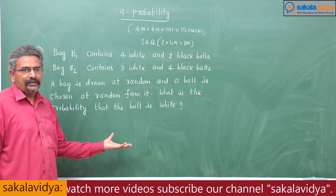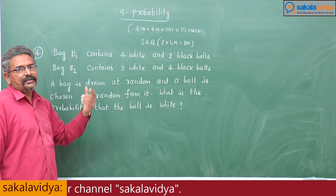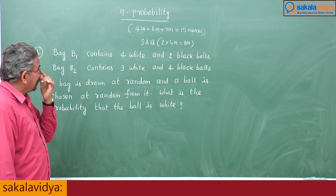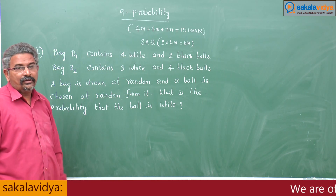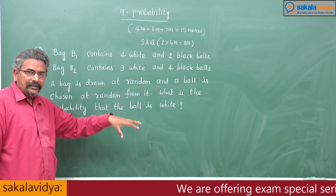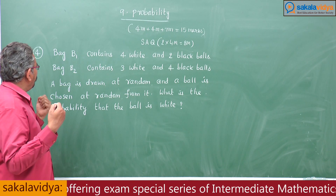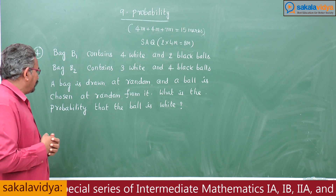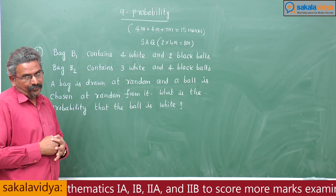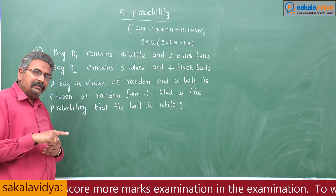We have 2 bags here. The first bag consists of 4 white and 2 black balls, whereas the second one has 3 white and 4 black balls. First we have to select a bag at random, then pick a ball. The white ball may come from the first bag or the second bag.